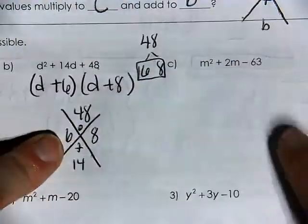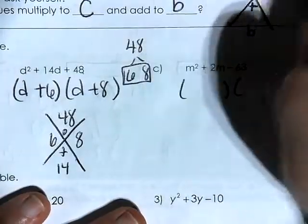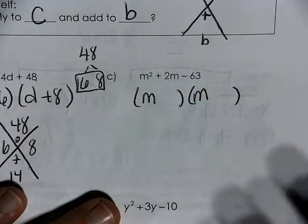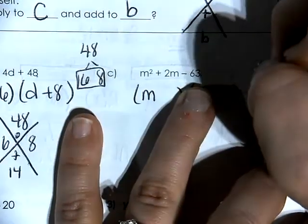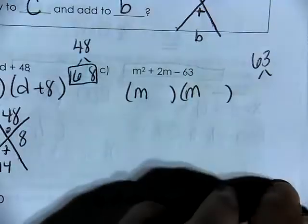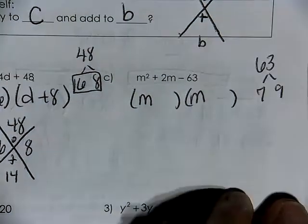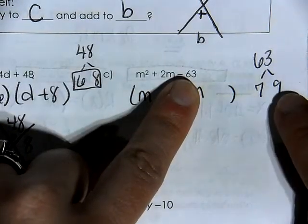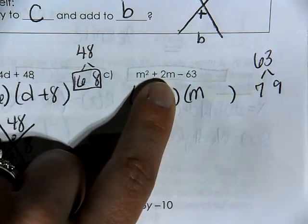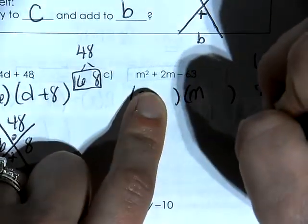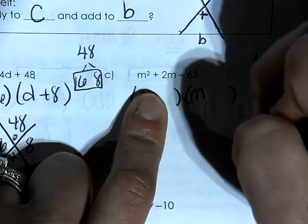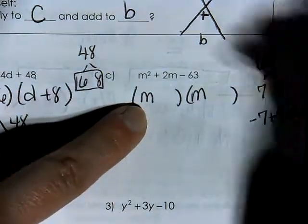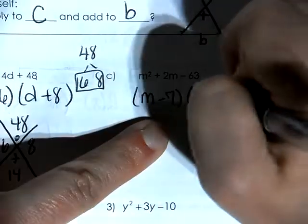For the next one I'll do it in my head. I split apart the m squared into an m and an m, and I have to think of negative 63. When I think of plain 63, I think of 7 and 9. I want negative 63, so one must be negative. Negative 7 plus 9 equals 2, so my parentheses have m minus 7 and m plus 9.